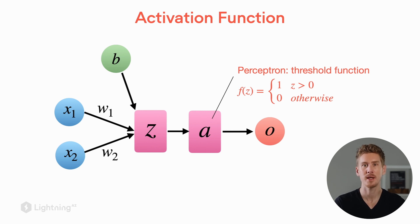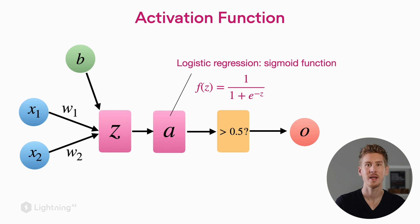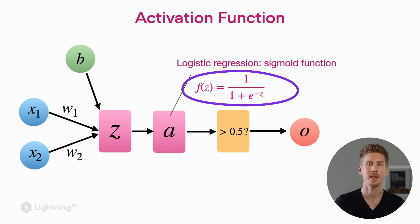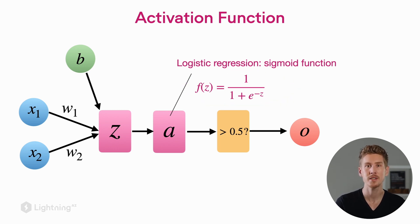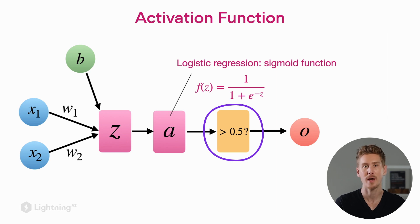Note that there is a difference between perceptrons and logistic regression: in the perceptron, the activation function itself is the threshold function. In logistic regression, the activation function is followed by a threshold function. The logistic regression activation function is also called the logistic sigmoid function, given by 1 over 1 plus e to the power of minus the net input. It's a nonlinear function, and the resulting activation is then passed through a threshold function checking whether it is greater than 0.5 to determine the class label. We will look at this sigmoid function in more detail in the next video.